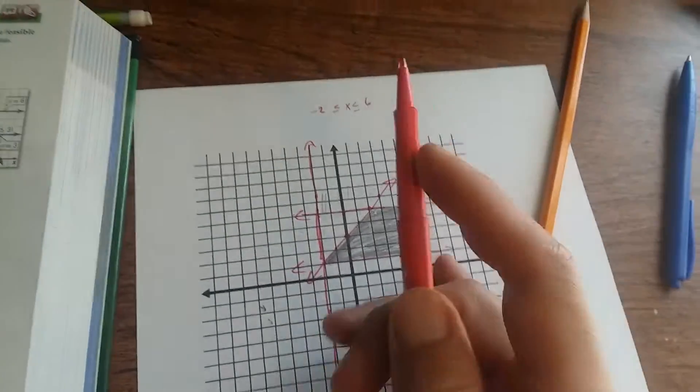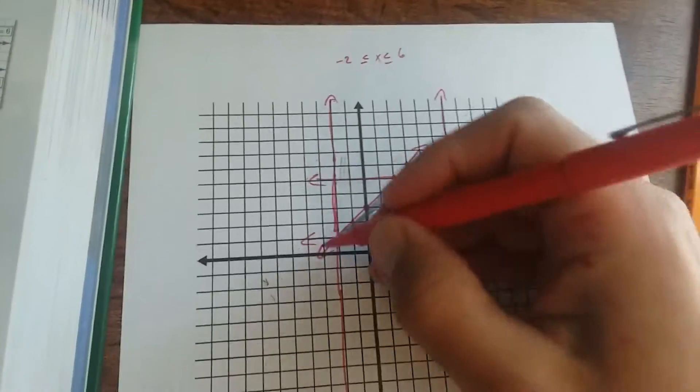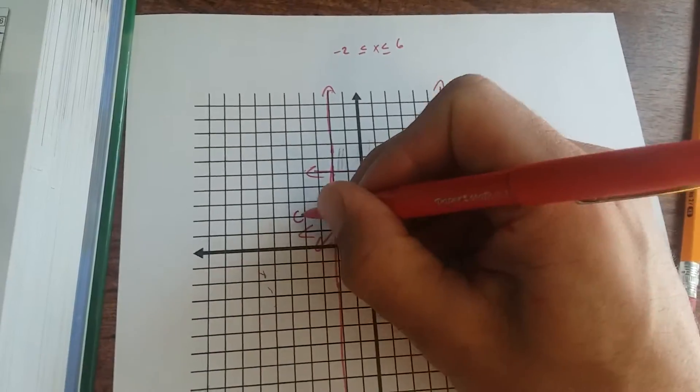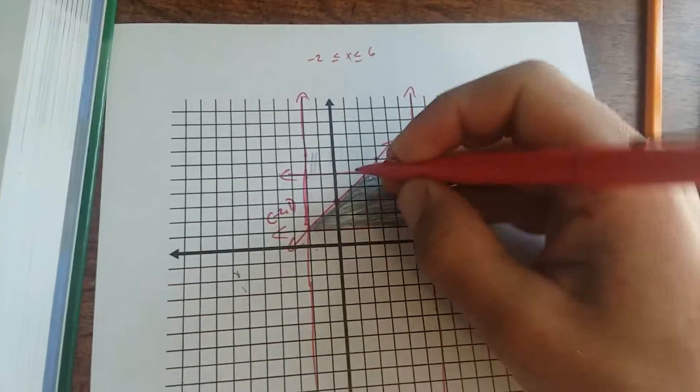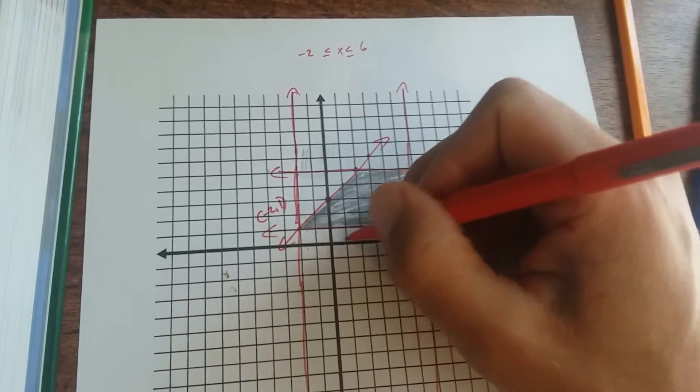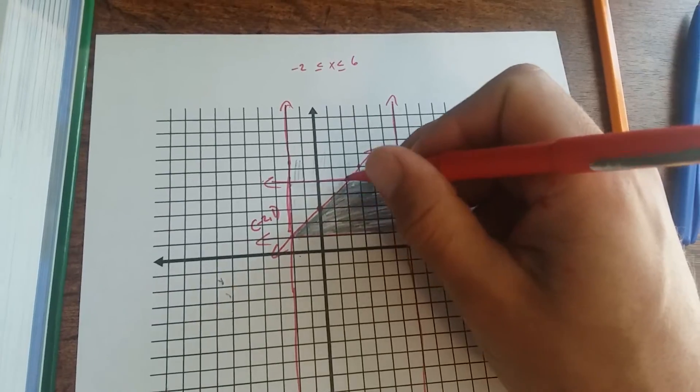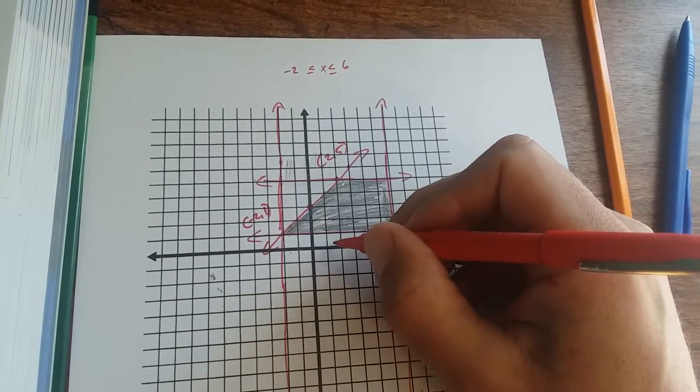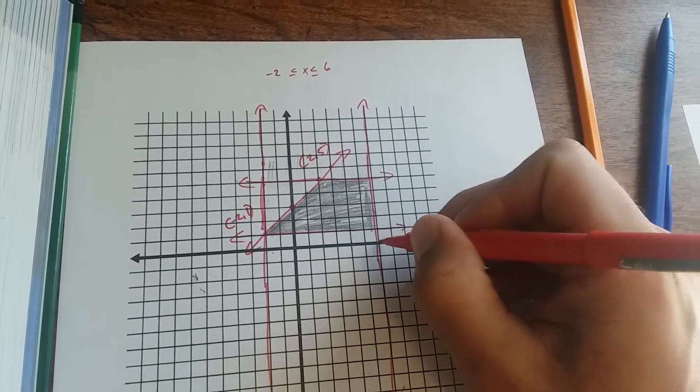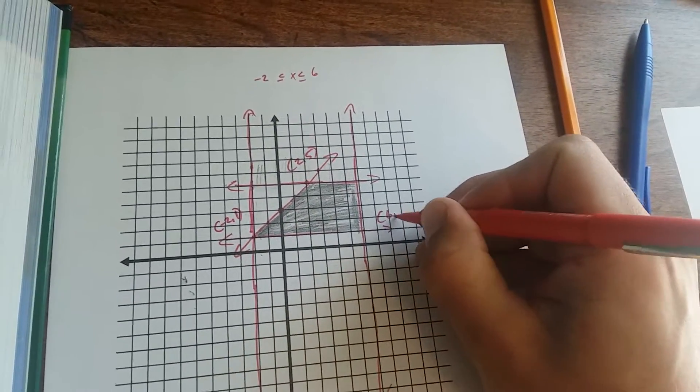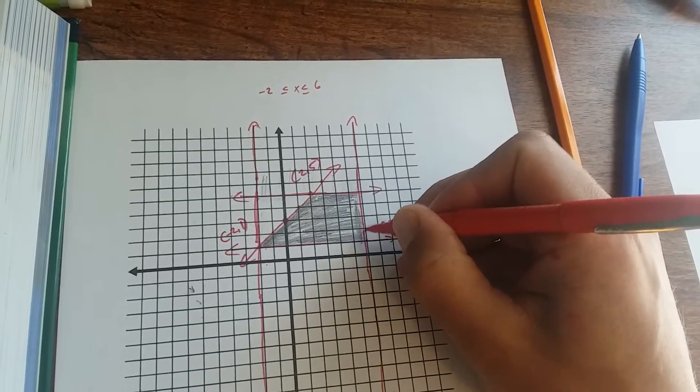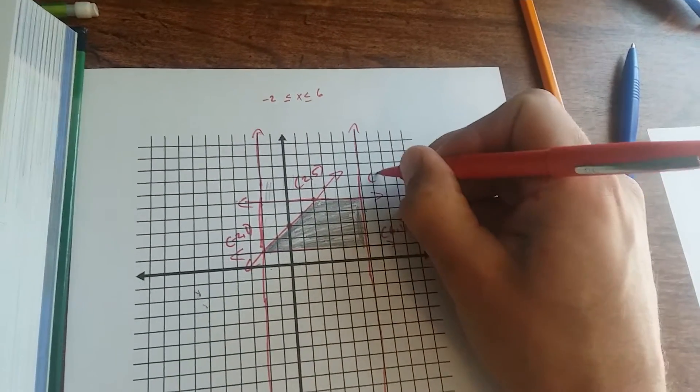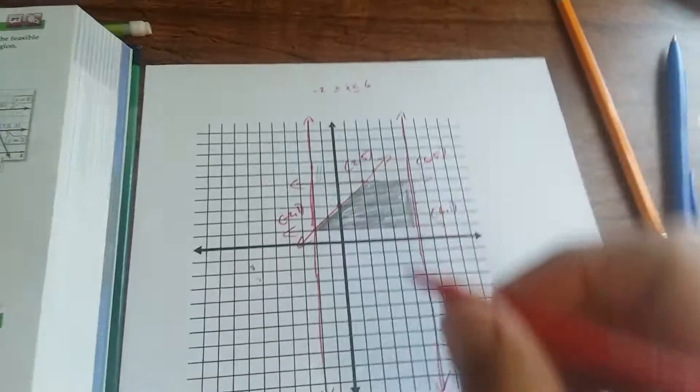You've got to identify your vertices. You're going to get a point for getting these vertices right. Negative 2, 1. It's over 2, up 1, 2, 3, 4, 5: that's 2, 5. Over 1, 2, 3, 4, 5, 6 and up 1: that's 6, 1. And then 2, 3, 4, 5: 6, 5.